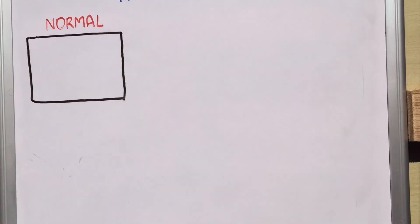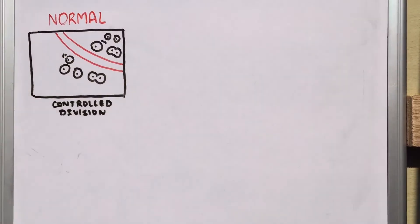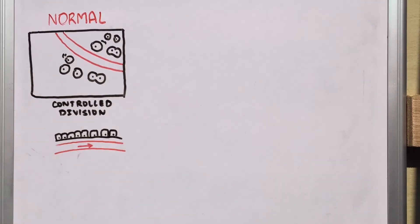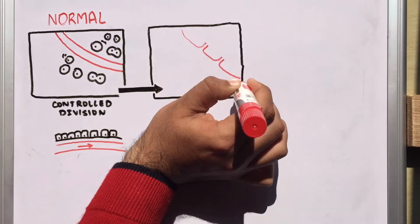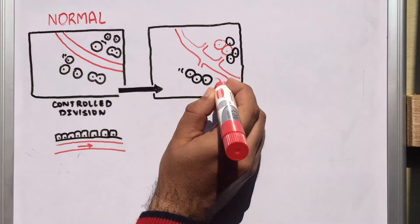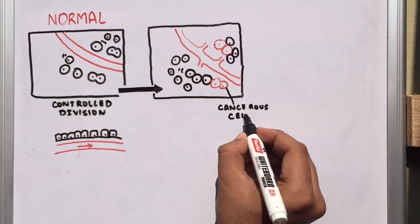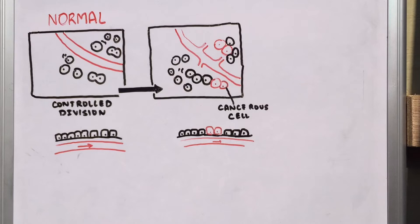First, we consider a normal tissue in which cells are dividing in a controllable manner and have a normal blood supply. These normal cells can undergo transformation — the red cells represent cancerous cells. This change from normal to cancerous cells can be due to genetic mutations, infections, or environmental factors. This whole transformation process of cells into abnormal cells is called dysplasia.